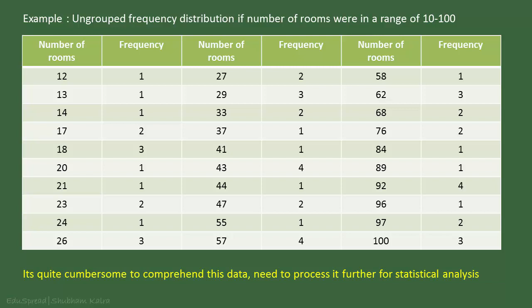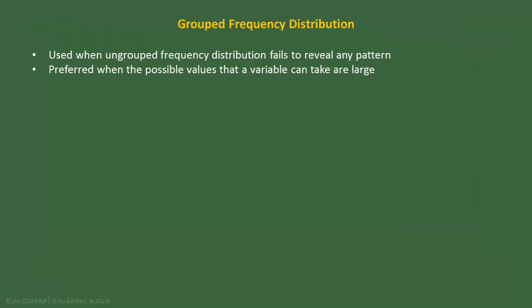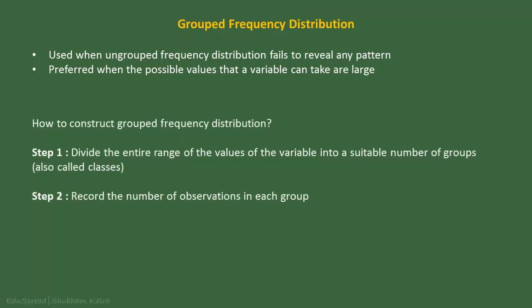Let's move on to grouped frequency distribution now. A grouped frequency distribution is used when ungrouped frequency distribution fails to reveal any pattern or is not able to condense the data much. It is also preferred when the possible values that a variable can take are large — for example, you may want to use a grouped frequency distribution if the number of rooms were in a range of 10 to 100. In a grouped frequency distribution, we divide the entire range of the values of the variable into a suitable number of groups.